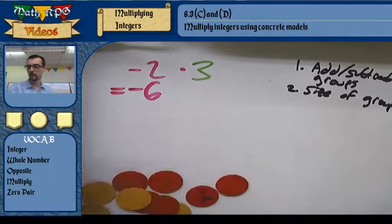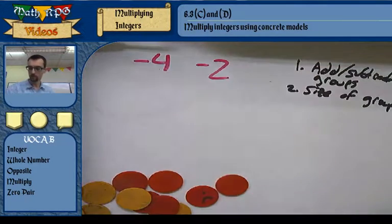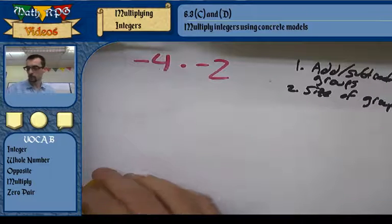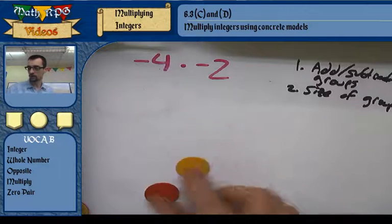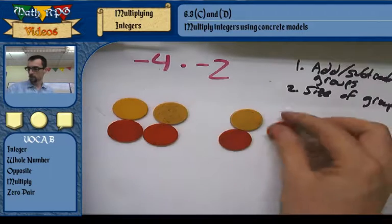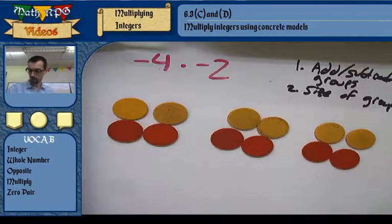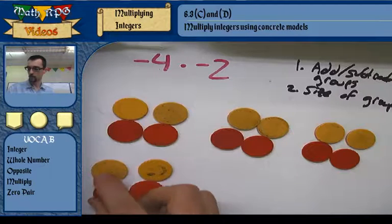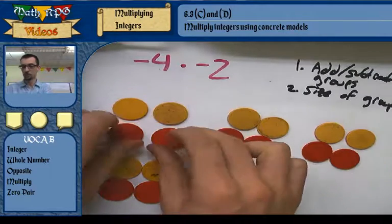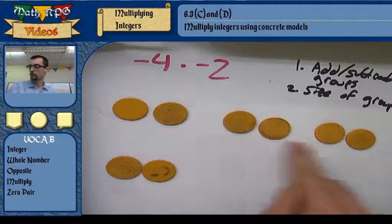Let's try one where I'm taking away a negative: negative 4 times negative 2, meaning take away 4 groups of negative 2. I don't have any groups of 2, so I invite in 0-pair couples. I add four pairs of couples — this doesn't change the value, it's still 0. Now I take away 4 groups of negative 2: one group, second group, third group, fourth group. I'm left with 1, 2, 3, 4, 5, 6, 7, 8 — and they're all positive.